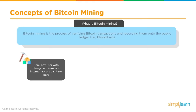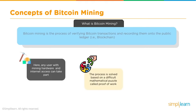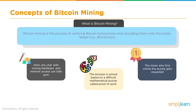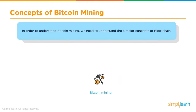The process is solved based on a difficult mathematical puzzle called proof of work. Every miner's job is to solve this puzzle to validate the transaction and earn the reward. All miners compete amongst themselves — the miner who first solves the puzzle gets the reward. These miners are participants in the network with the necessary hardware and computing power. To understand Bitcoin mining we need to understand three major concepts: distributed public ledger, SHA-256 encryption algorithm, and proof of work as the underlying consensus algorithm.